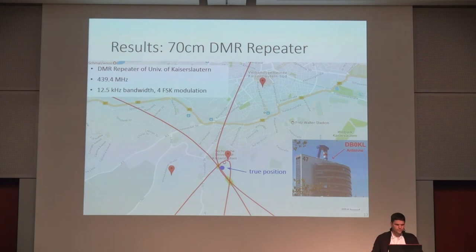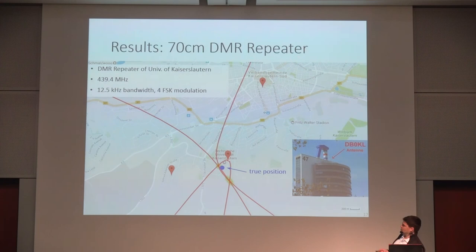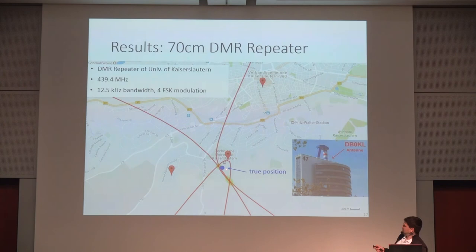The first signal analyzed was in the 70 centimeter band — a DMR repeater of the University of Kaiserslautern. You can see the three hyperbolas, and in this case they intersect at two points, so there are two possible locations, but they are only about 200 meters apart. The true position is on a building at the university, and the localization comes quite close to the actual transmitter's position.